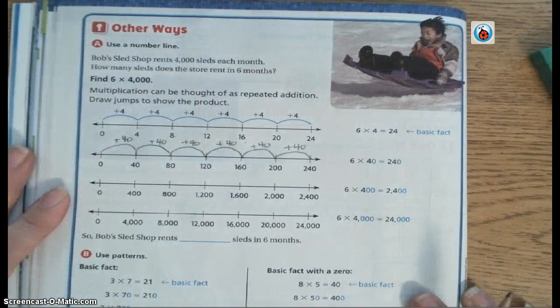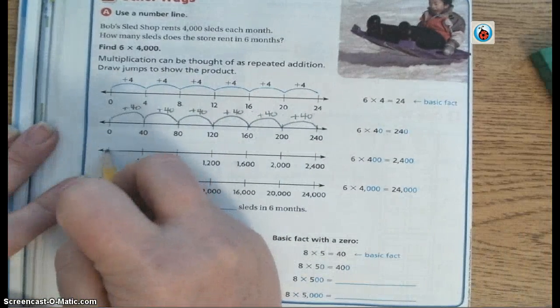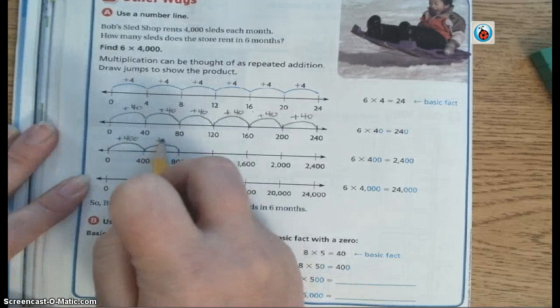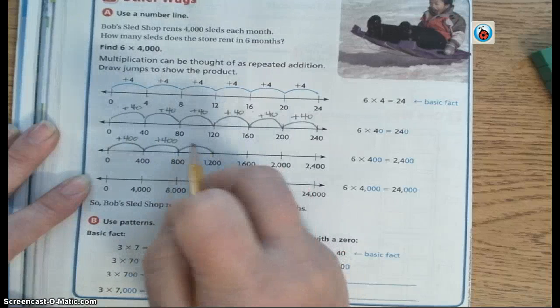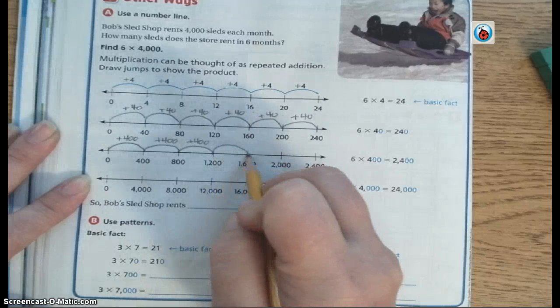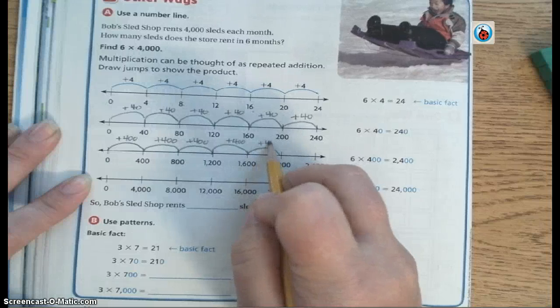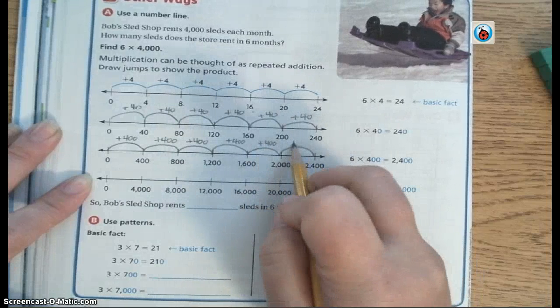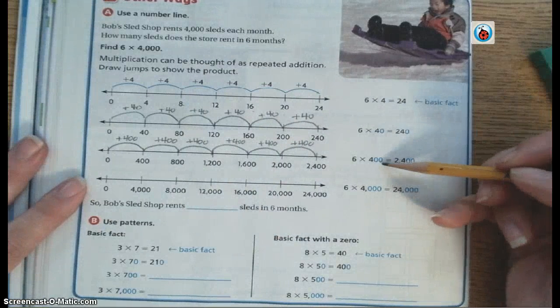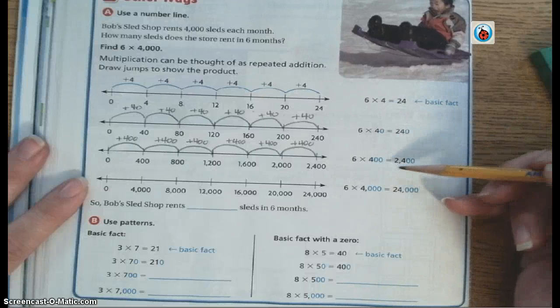So now my problem is still 6 times 4,000, so I haven't made it there yet. So this time, instead of doing plus 40, I'm going to do plus 400 on each of my jumps. So you can see it's very similar to the last number line I did, except instead of 40s, I'm doing 400s. So 1,200 plus 400 is 1,600, 1,600 plus 400 is 2,000, and 2,000 plus 400 is 2,400. So now, instead of multiplying by 4 or 40, I'm doing 400, and my answer is 2,400.